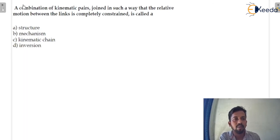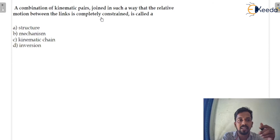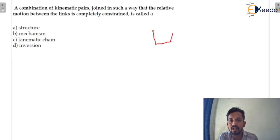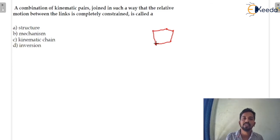A combination of kinematic pairs joined in such a way that the relative motions between the links is completely constrained — this will make a kinematic chain. When one link is connected to the last link in such a way that they are having relative motions, we will say this is a kinematic chain.